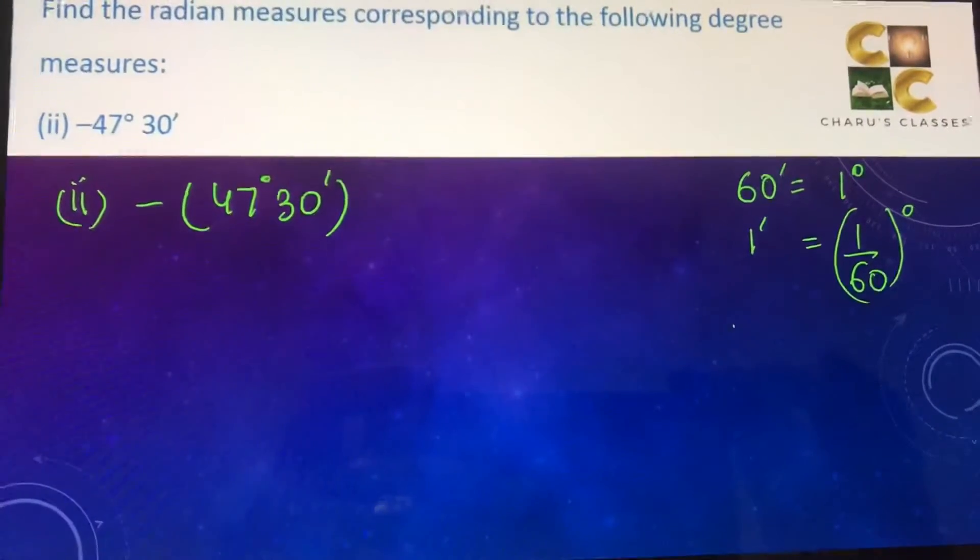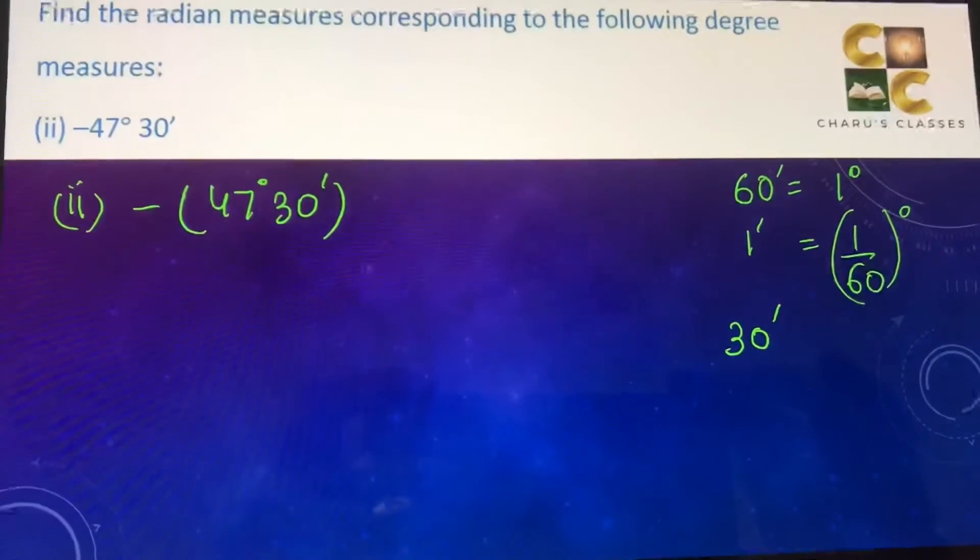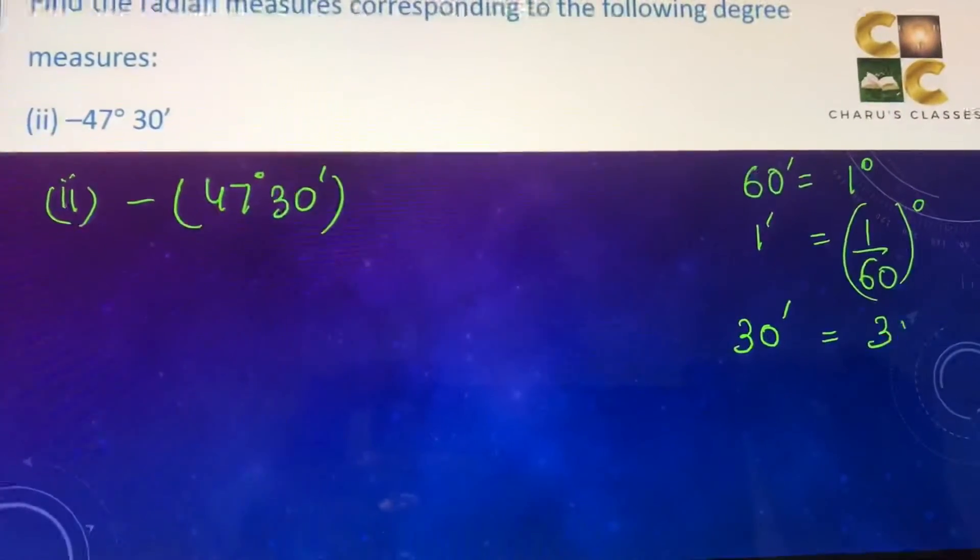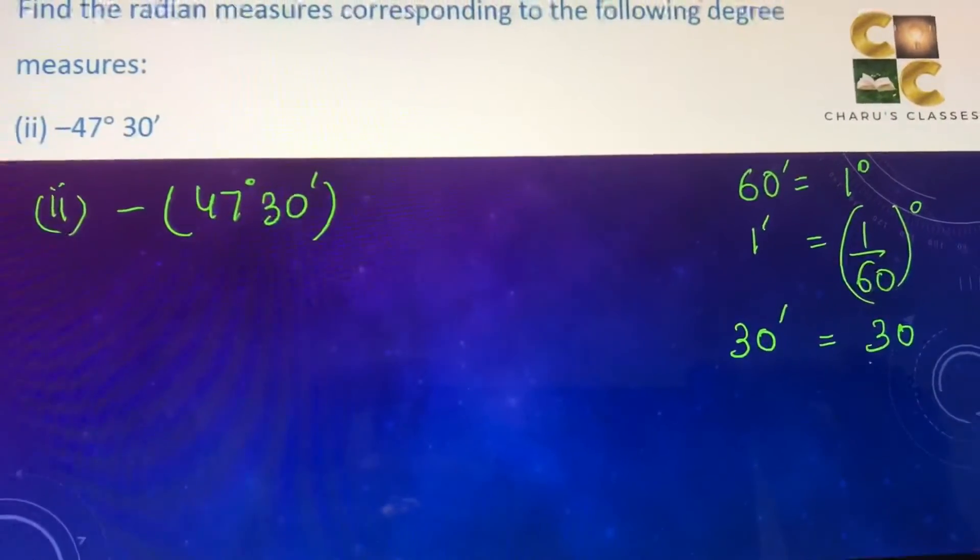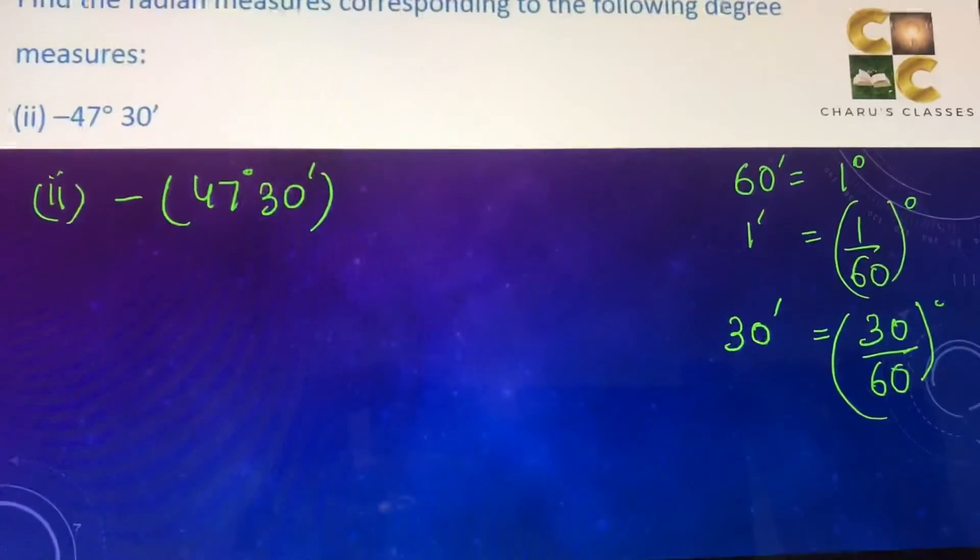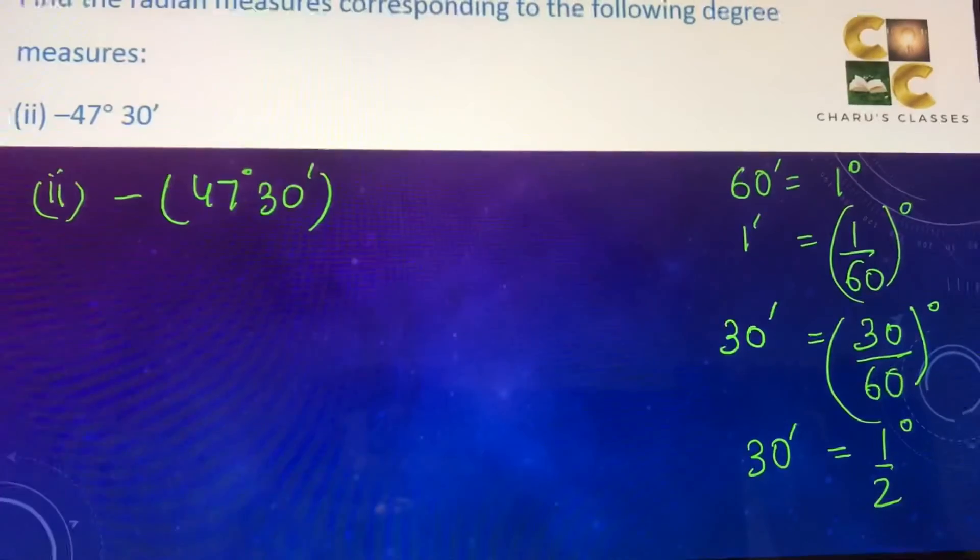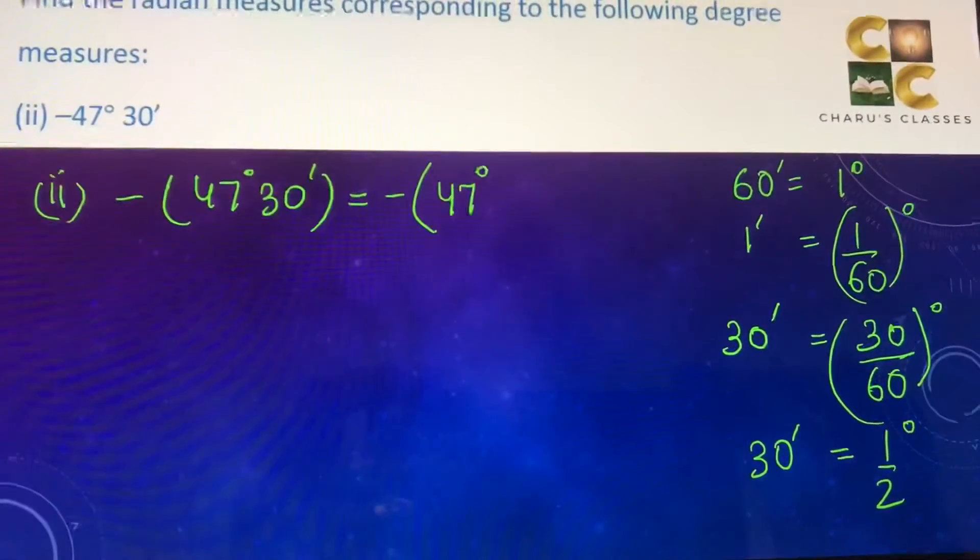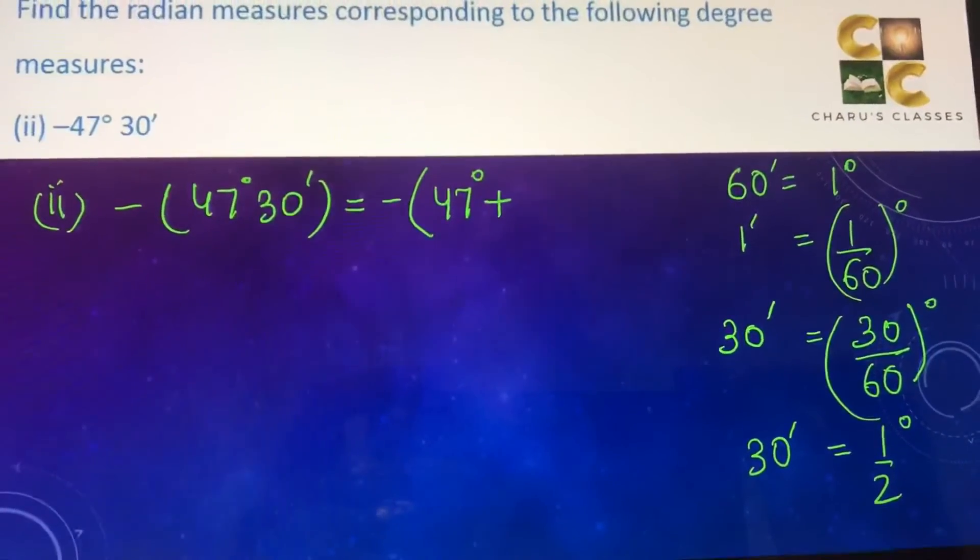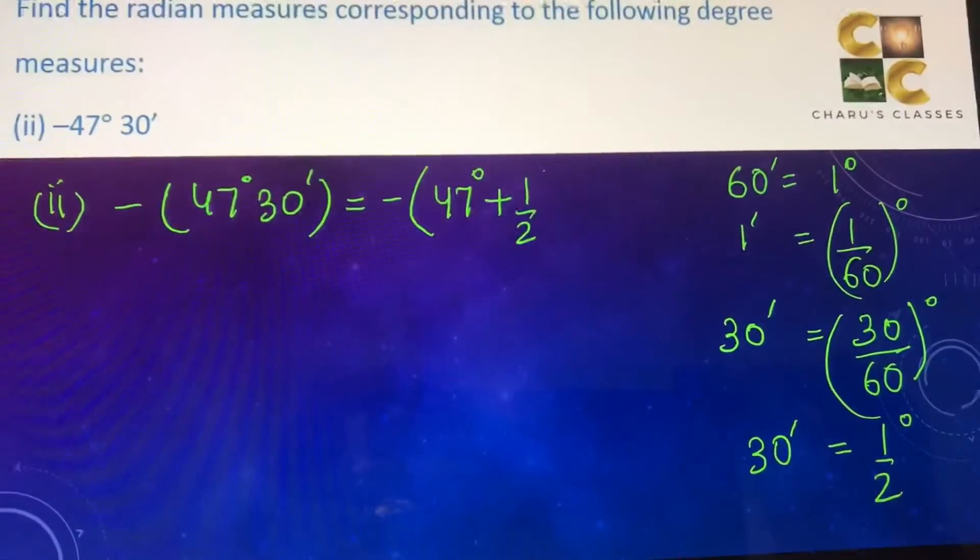So if we are converting 30 minutes into degrees we can write it as 30 into 1 by 60, or 30 by 60 degrees, which will be half degrees. So this can be written as 47 degrees plus 30 minutes, which is half degree.